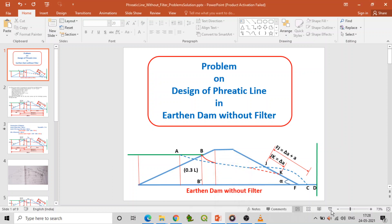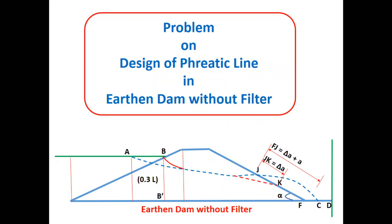Hi viewers, today we'll see the solution for a problem on design of phreatic line in an earth dam without filter. You can see the basic concept of phreatic line in the case of without filter. We can see the dam height and the upstream and downstream slopes. The blue dashed line indicates the phreatic line; in general it is crossing beyond the focus point, that is the toe area.